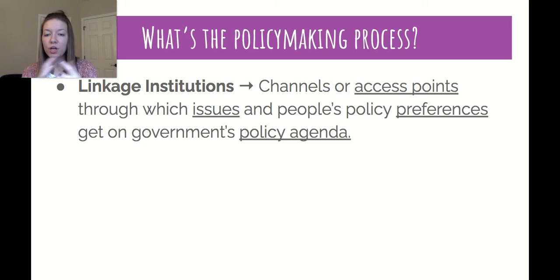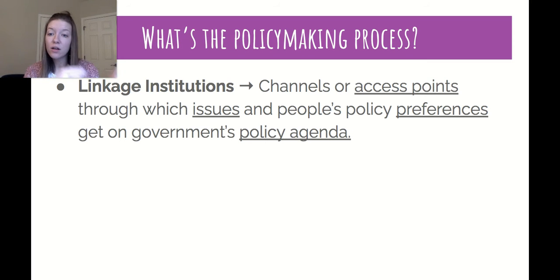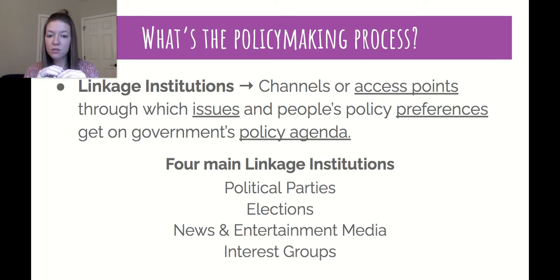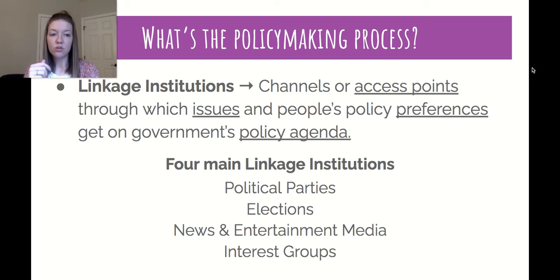Once we've decided what issues are important, we need a way to have our ideas and policy concerns go to the government itself — that is how linkage institutions play a role. These are channels or access points through which issues and our preferences get onto the policy agenda. There are four main linkage institutions: political parties, elections, the news and media, and interest groups.